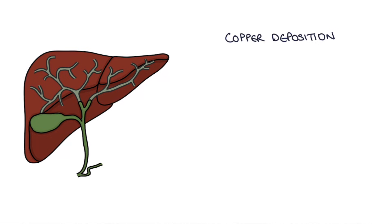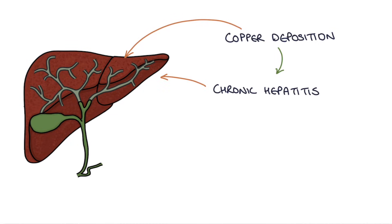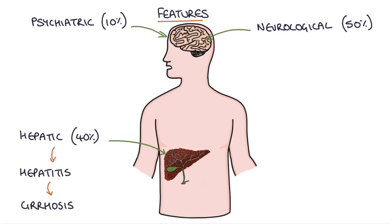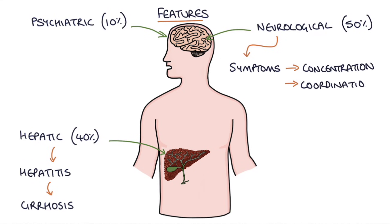Copper deposition in the liver leads to chronic hepatitis — inflammation of liver cells that have excessive copper in them — and eventually this leads to liver cirrhosis. Copper deposition in the central nervous system leads to neurological and psychiatric problems. Neurological symptoms can be subtle and range from concentration or coordination difficulties to dysarthria, which is speech difficulties, and dystonia, which is abnormal muscle tone.